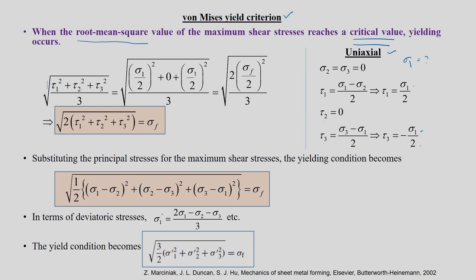Substituting into the equation: tau_1² = (sigma_1/2)², tau_2² = 0, tau_3² = (sigma_1/2)². This gives 2 × (sigma_1/2)². With sigma_1 = sigma_f (only one principal stress), we get: sqrt[2] × sqrt(tau_1² + tau_2² + tau_3²) = sigma_f. This is the first-level equation for the von Mises yield function, though it is expressed in terms of tau_1, tau_2, tau_3.